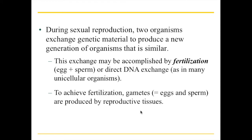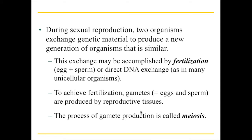In order to do this, you need reproductive tissues that prepare those special egg and sperm cells. These are collectively known as gametes, and gametes are produced by reproductive tissues. The process by which we produce gametes is called meiosis, and that is what we'll talk about in the last parts of this lecture.